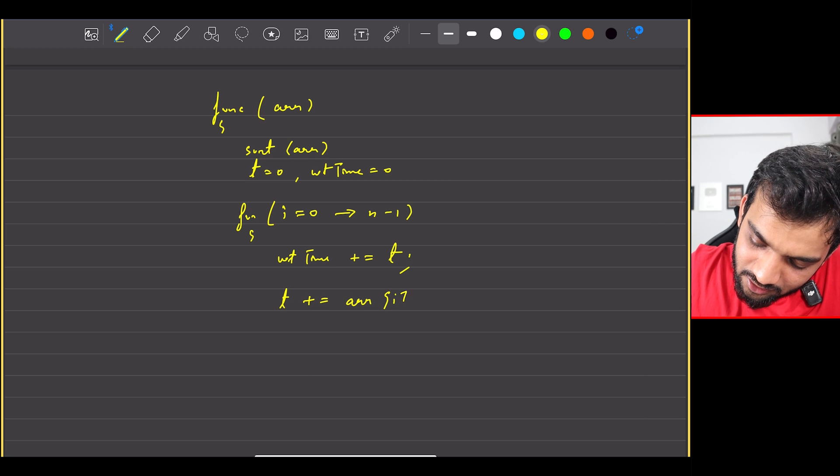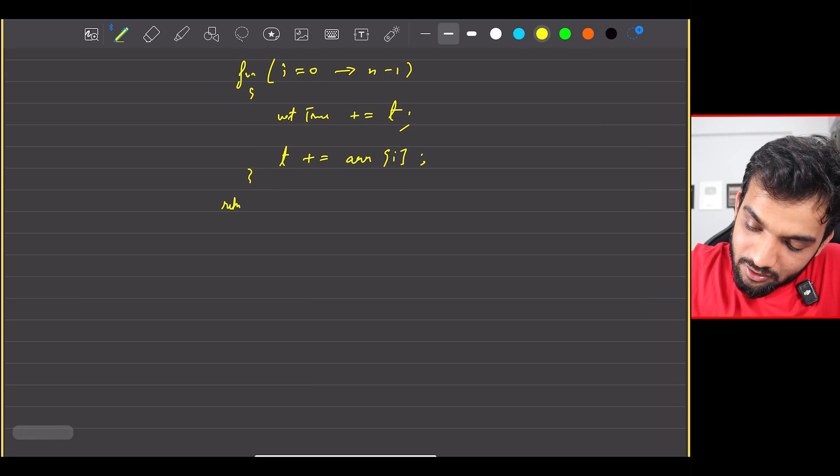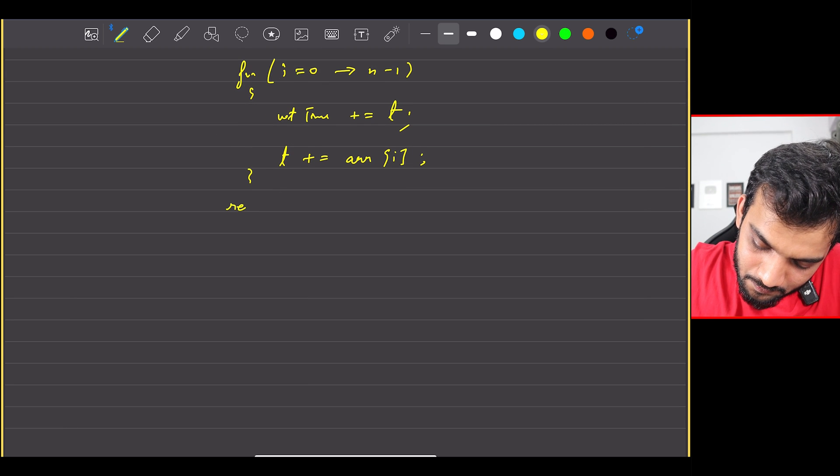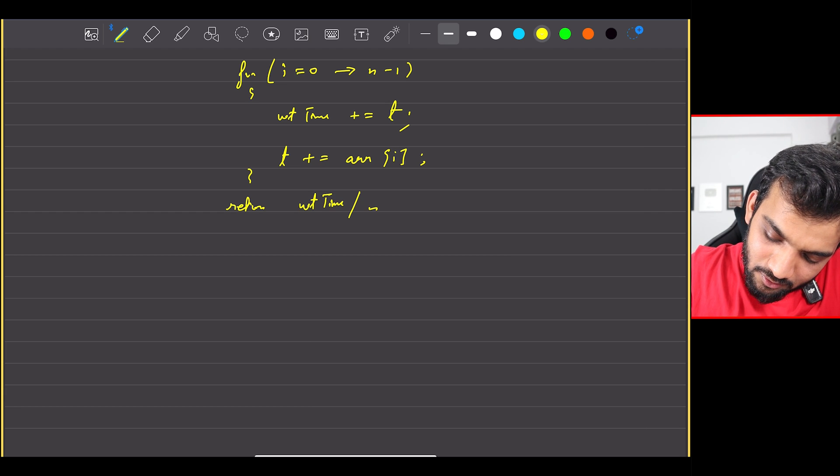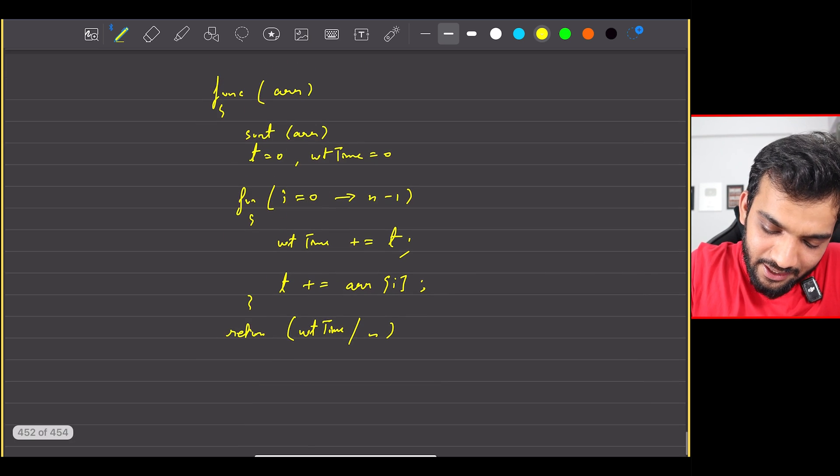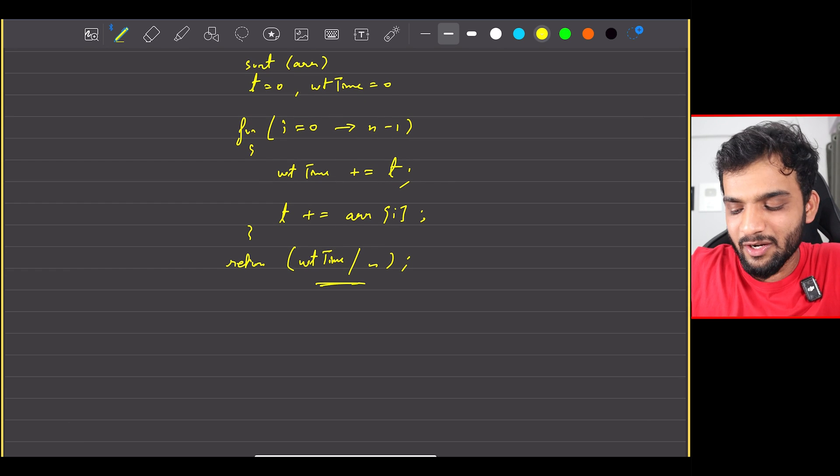And you can say, okay, the wait timer initially is gonna be when this current process is starting, and when does it end? T plus equal to array of i. So this is it. Yeah, that's it.